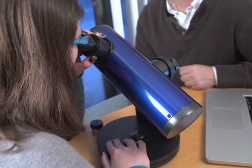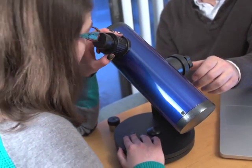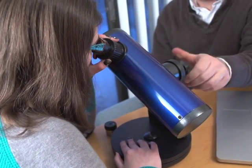The Dobsonian mount makes it so easy to adjust for the right view. Simply tilt the telescope up and down and keep it in place with the single altitude locking knob.